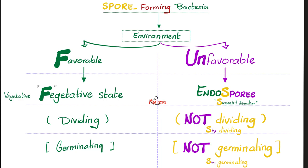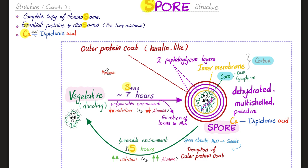What's the structure of the spore? The spore has DNA of the bacteria in it — just like the regular DNA, that copy of the chromosome. A complete copy — not half, not sorta kinda-ish. Everything in the chromosome is still here. We also have in the spore the bare minimum of essential proteins and ribosomes, and we have calcium bound to dipicolinic acid.